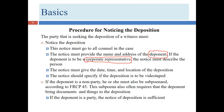If the deponent is a party, only the notice of deposition is necessary. If the deponent is not a party, you must subpoena them under Federal Rule of Civil Procedure 45. You can also include a subpoena duces tecum — meaning 'bring this stuff with you' — listing documents the deponent must bring. Sometimes you notice a deposition of a non-party not to ask questions but simply to obtain documents, and you can also request a party to bring documents to a deposition.